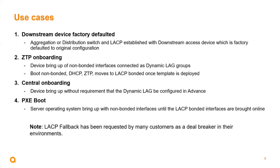There are many use cases for the feature. Consider just some of the use cases. The first one is a factory defaulted downstream device where reboots cause bonded interfaces to become unbonded, resulting in communication loss unless those ports are taken out of the link aggregation group on the distribution switch.